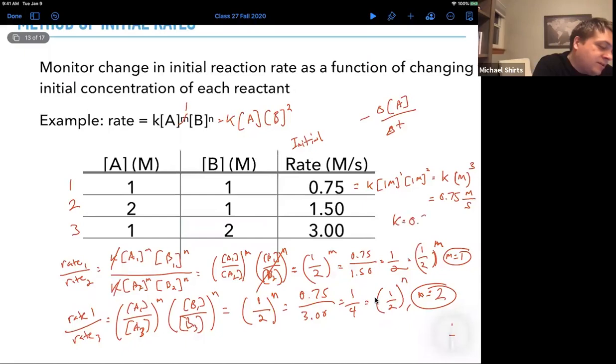Inverse seconds times, let's write it inverse seconds this way. Seconds to the minus one molar to the minus two. So clearly this does have to be what the rate is because if we multiply seconds to the minus one molar to the minus two times three molars, we get molar over second, which is what the units are.